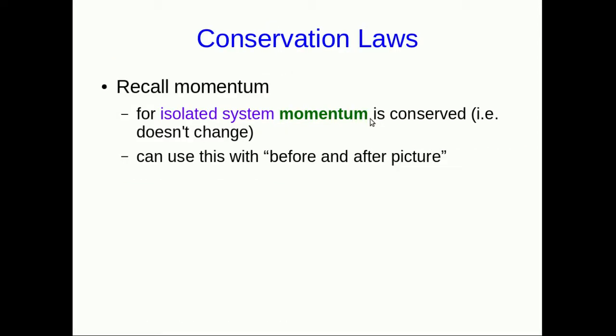In the last set of lectures we met the law of conservation of momentum, which is our first conservation law. It basically says that for an isolated system the momentum never changes. We say that's conserved, and we use this in a strategy where we draw before and after pictures, and we can use the conservation of momentum to write equations that get us information about before and after in terms of each other so we can solve for things.